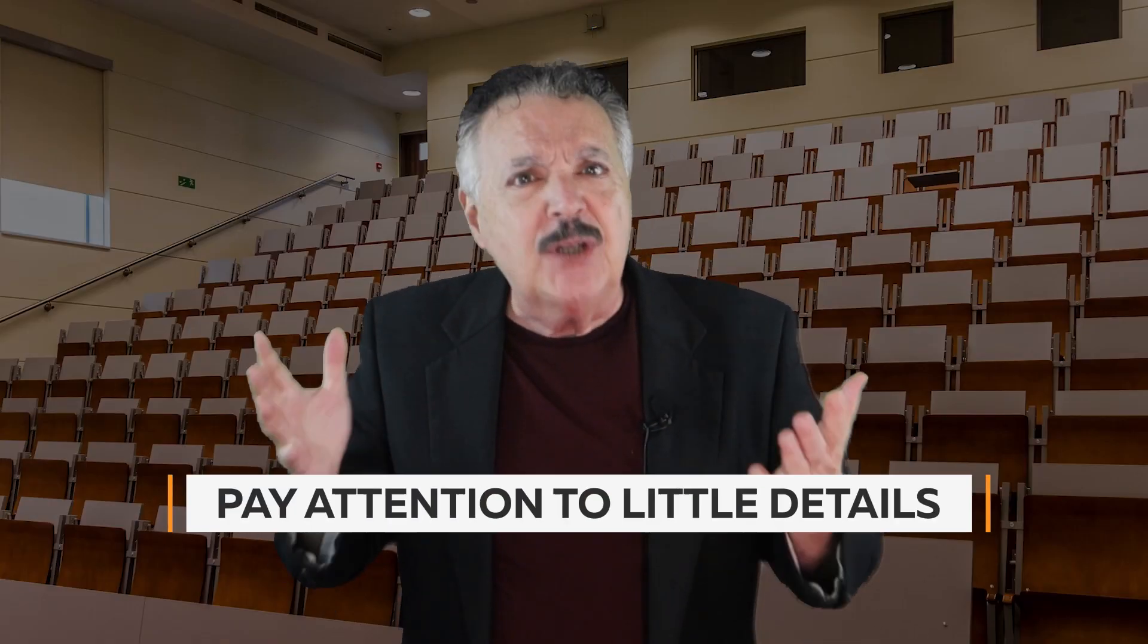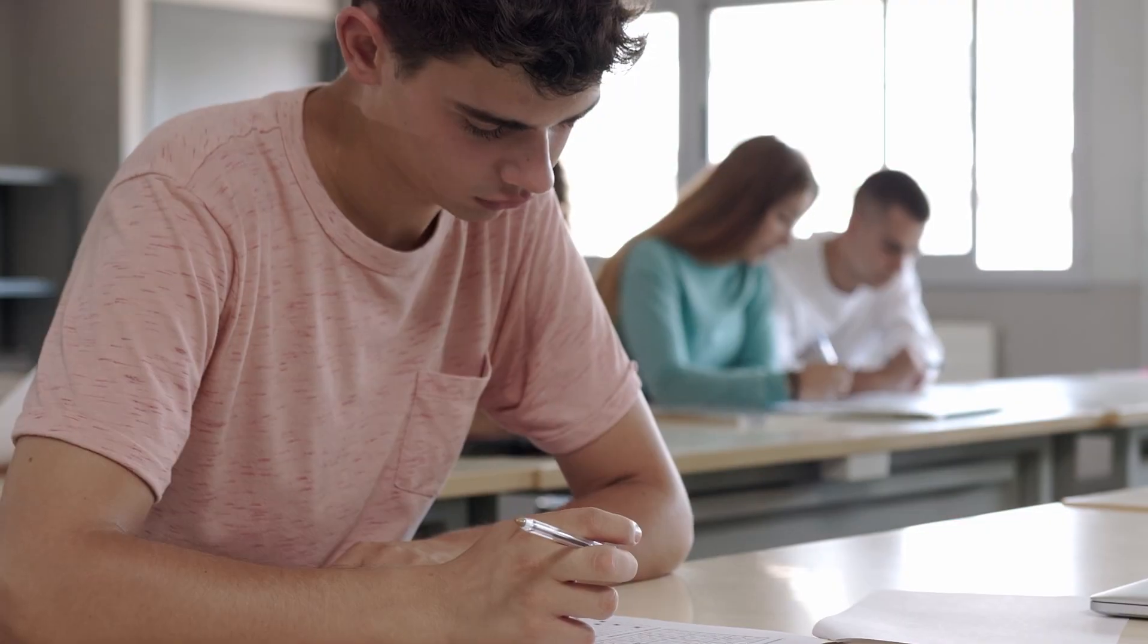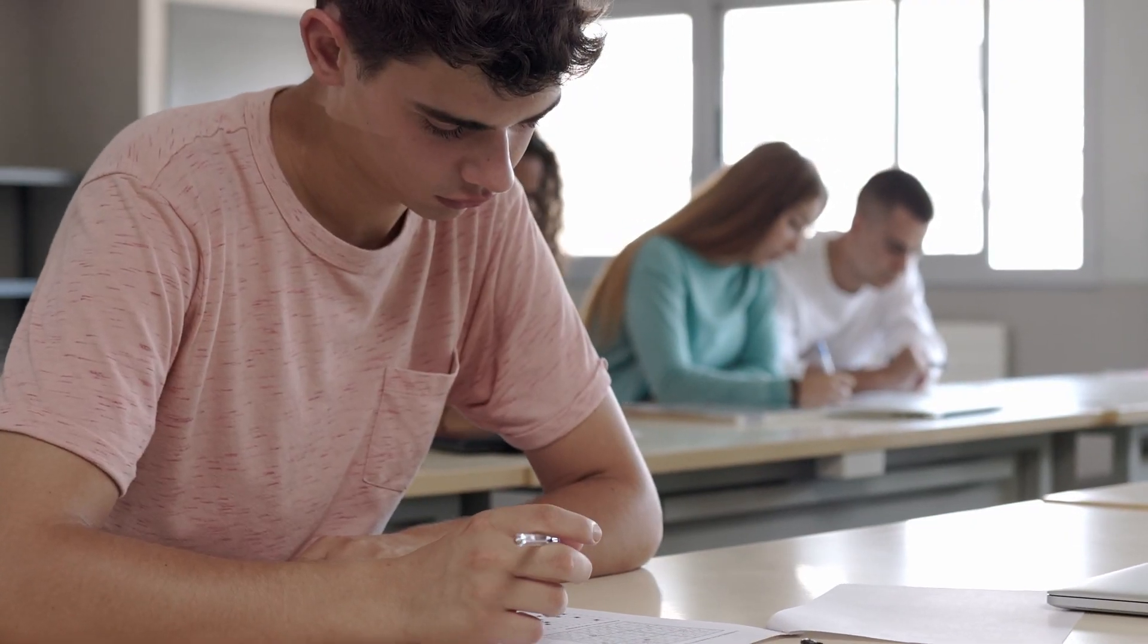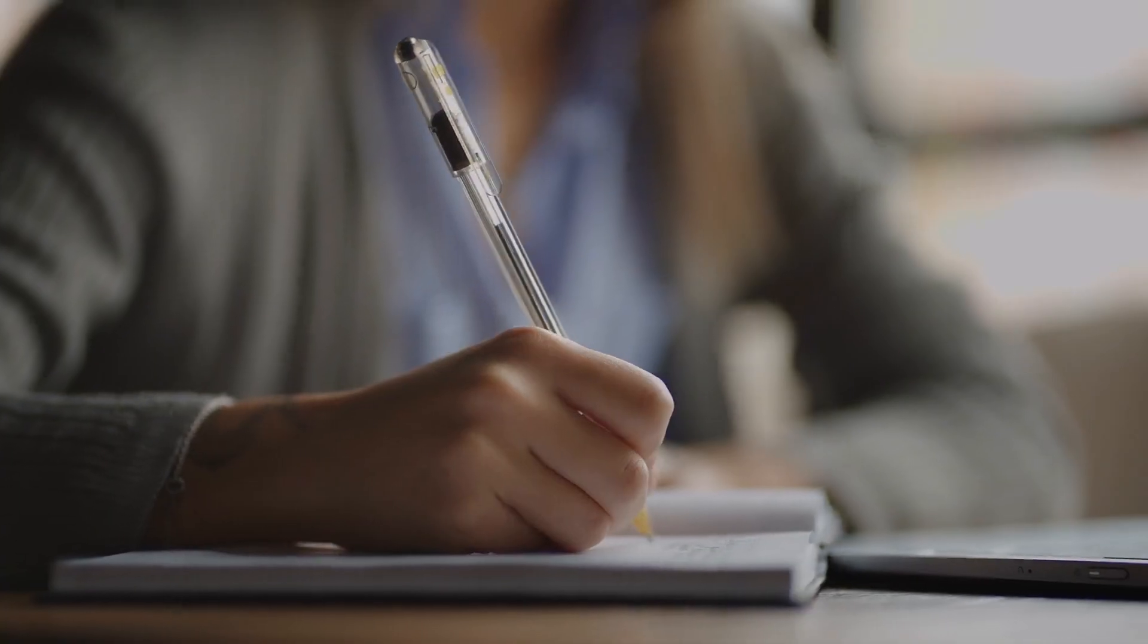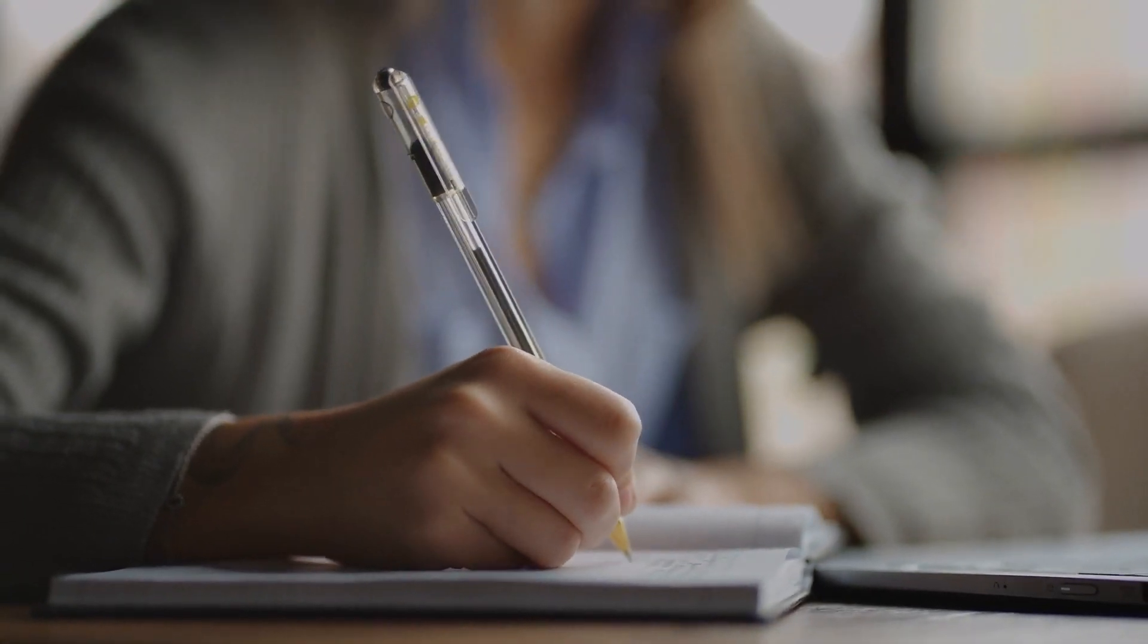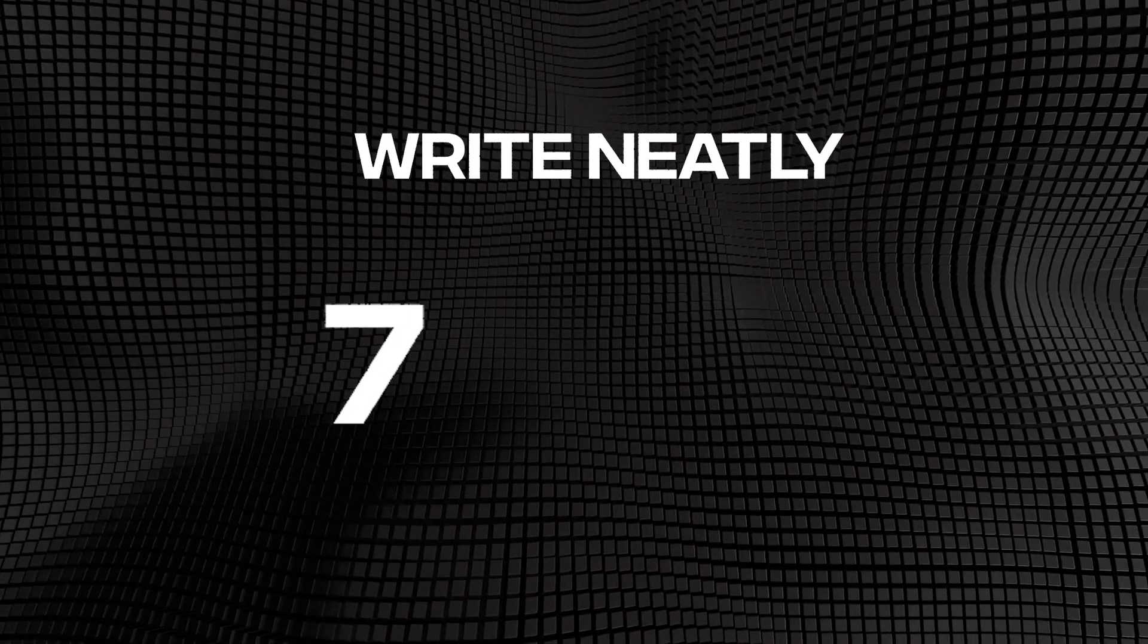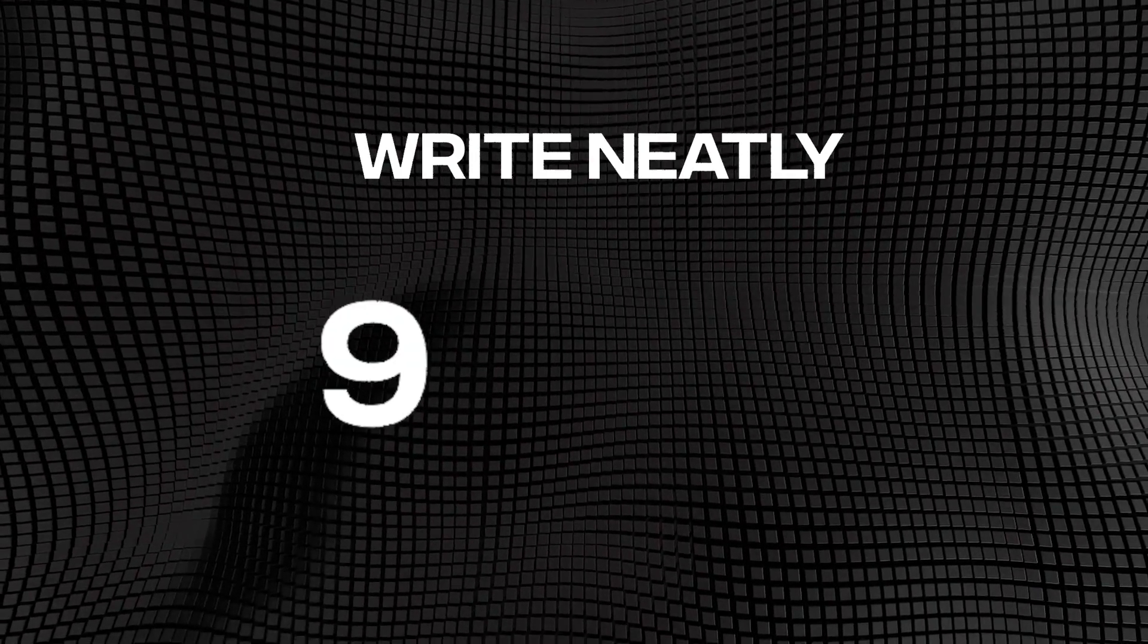Number one, pay attention to the little details. Easily, one of the biggest causes for students getting wrong answers is that they were careless in the way they wrote information down on the paper. Here are some examples and solutions. Write neatly. Don't make your zeros look like sixes or your threes look like eights or make a seven look like a one or a nine look like a four.